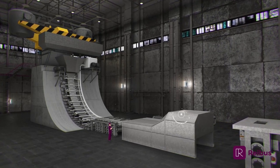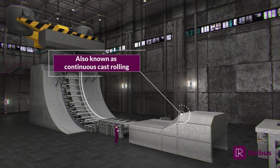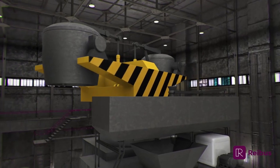Cast strip is the product produced by the continuous cast rolling process, also known as a strip caster.